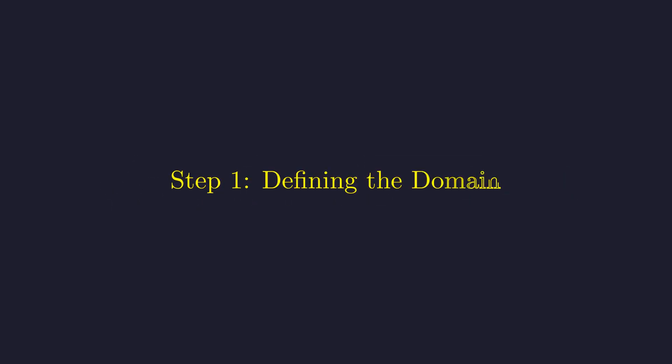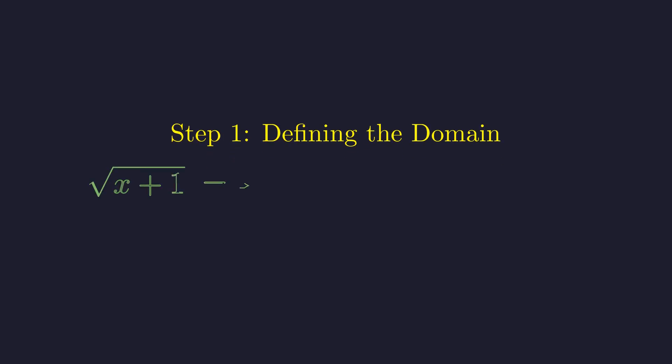Before we start manipulating this equation, we need to figure out what values of x actually make sense — when are these square root expressions defined in the real numbers? This is what we call the domain. For the first square root term, what's under the radical, x plus 1, needs to be non-negative, so x plus 1 must be greater than or equal to 0, which means x is greater than or equal to negative 1.